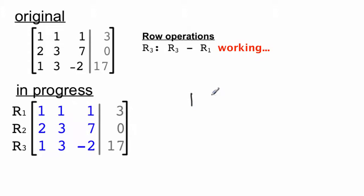And here's what it looks like. Row 3 is 1, 3, negative 2, 17. We're going to subtract away row 1. And row 1 is 1, 1, 1, 3. Subtract. 0, 2, negative 3, and this is 14. So row 3 we are going to replace with 0, 2, negative 3, 14.